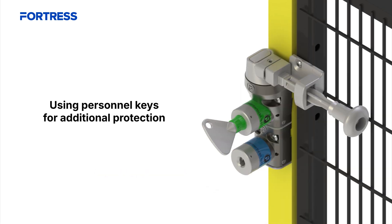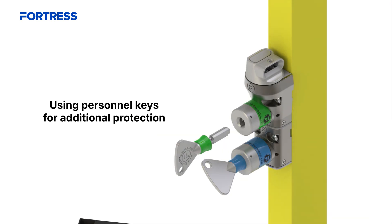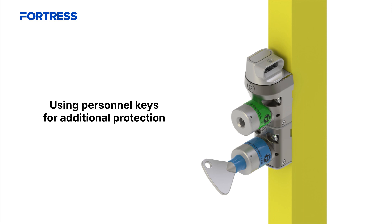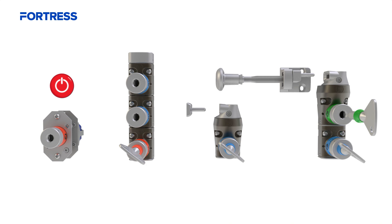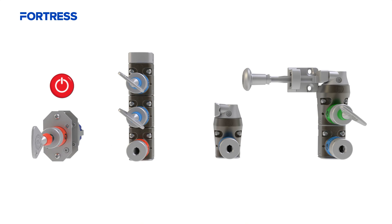For added safety, a personnel key can be used. The operator keeps this key with them inside the safeguarded space, and until it is returned, the access key remains trapped and the access lock cannot be closed. The defined process requires exact reversal to re-energize the hazardous energy or to restart the machine.